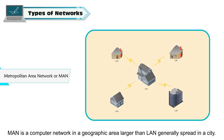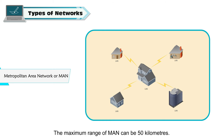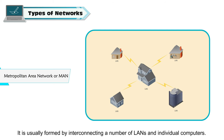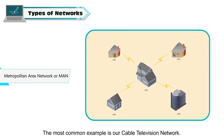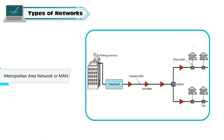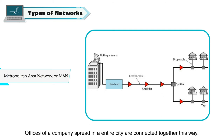Metropolitan Area Network or MAN is a computer network in a geographic area larger than a LAN, generally spread across a city. The maximum range of a MAN can be 50 kilometers. It is usually formed by interconnecting a number of LANs and individual computers. The most common example is a cable television network. Offices of a company spread across an entire city are connected together this way.